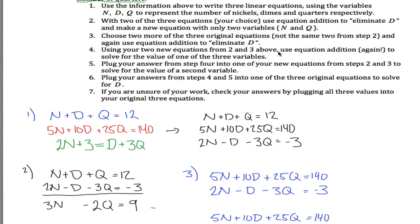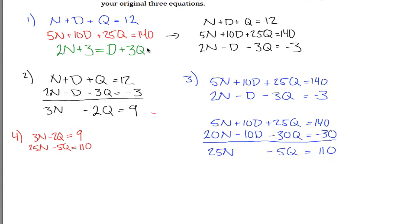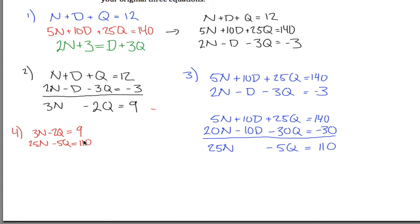So it wants me to use those two equations. Let's see, does it specify? Use equation addition again to solve for the value of one of the three variables. Okay, so I have to get rid of either N's or Q's. I don't think either one's especially easy.